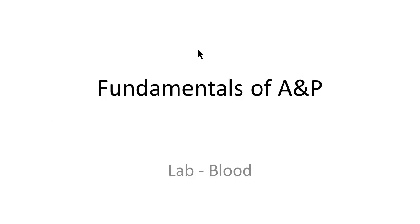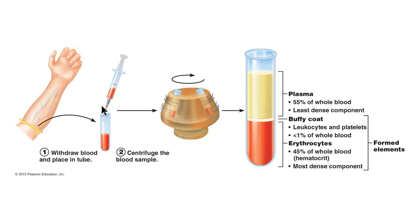Starting by looking at the blood. Here we see a vial of blood drawn from a vein in the arm that has been spun down in a centrifuge. When we spin blood down, the heavier components settle to the bottom of the tube and the lighter components are on top. This liquid portion of the blood is called the plasma, and it makes up about 55% of our blood. It has lots of important chemicals and molecules dissolved in it, even though it's 90% water, and it has a yellowish, straw-colored appearance.